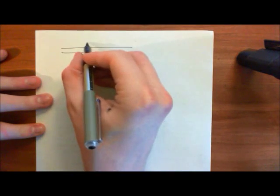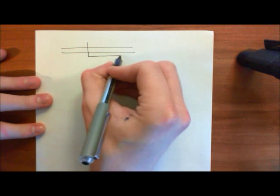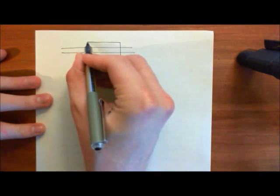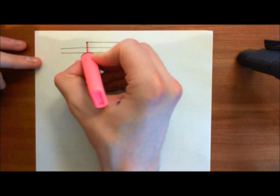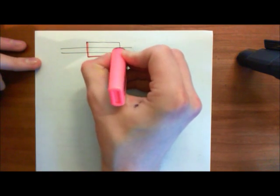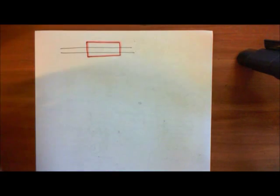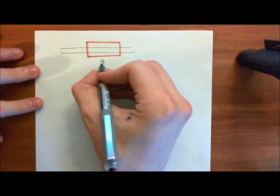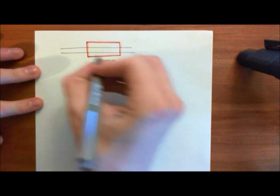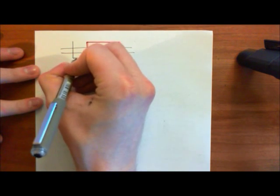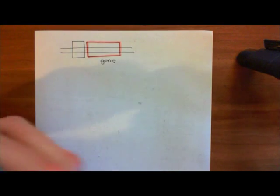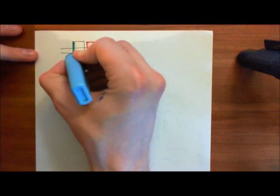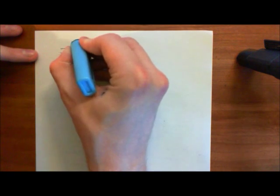Upstream of all eukaryotic genes, I'll draw a double-stranded piece of DNA here, and I'll also have my gene here highlighted by this red box. Upstream of all genes in the eukaryotic genome, you have a region of DNA known as the promoter region. This portion here, which I'll highlight in blue, is known as the promoter region.